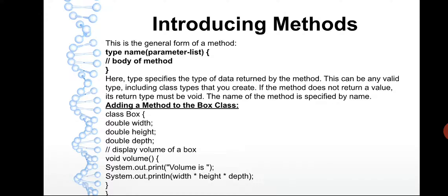Next, you can see the example of adding a method to the Box class. For all examples we are using the Box class — it is easy to explain. When you start coding, it is not mandatory to use Box; you can create any class with any name. Just make sure you don't use predefined keywords. For example, you cannot use 'main' or 'float' as a class name — 'main' with a capital M is okay, but lowercase 'main' is already a method name.